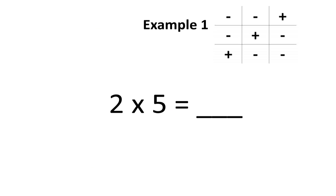In our first example, we want to find what positive 2 times positive 5 is equal to. We don't need a shortcut for this, as we should know that positive 2 times positive 5 gives you positive 10.